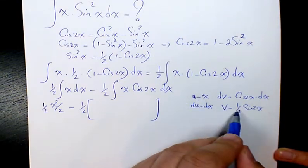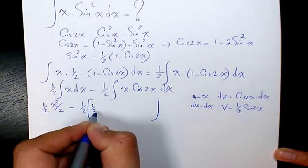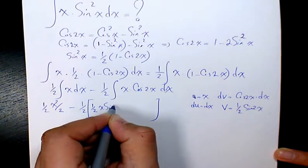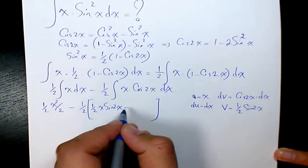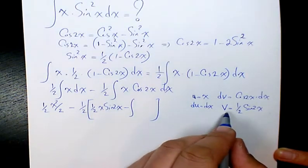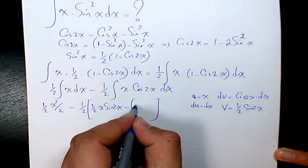So we have u times v which is 1 over 2 x sine 2x minus integration of v du which is 1 over 2 sine 2x dx.